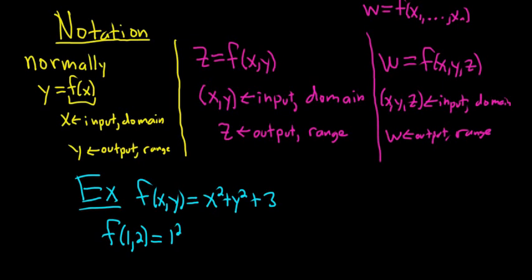That would mean that we replace all of the x's with 1's and all of the y's with 2's. This would be 1 squared plus 2 squared plus 3. This would be 1 plus 4 plus 3. So 1 plus 4 is 5, 5 plus 3 is equal to 8. So f of 1, 2 is equal to 8. So this is your output and your input is the ordered pair (1, 2).